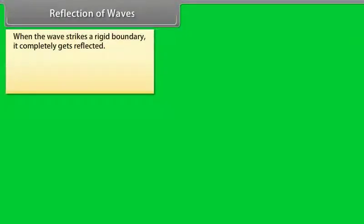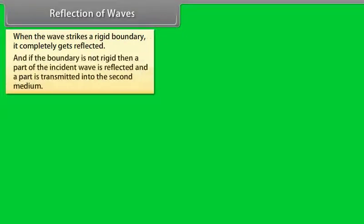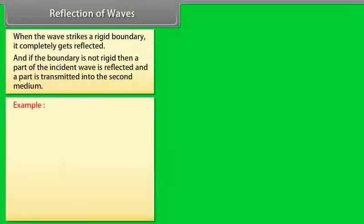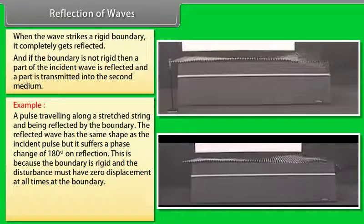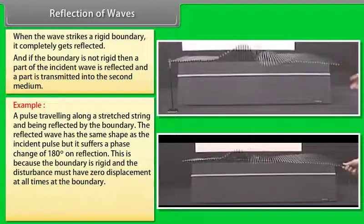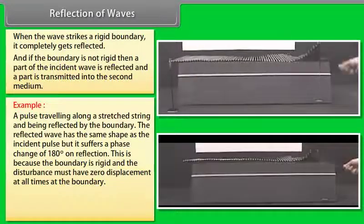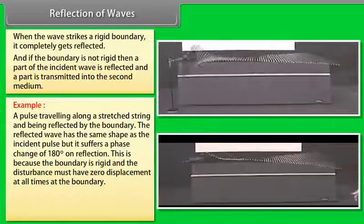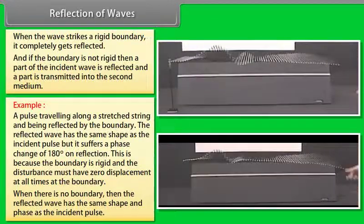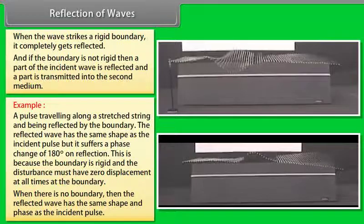When a wave strikes a rigid boundary, it is completely reflected. If the boundary is not rigid, a part of the incident wave is reflected and a part is transmitted into the second medium. A pulse traveling along a stretched string reflects from a rigid boundary with the same shape as the incident pulse but suffers a phase change of 180 degrees. When there is no rigid boundary, the reflected wave has the same shape and phase as the incident pulse.